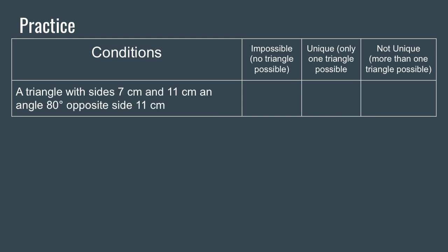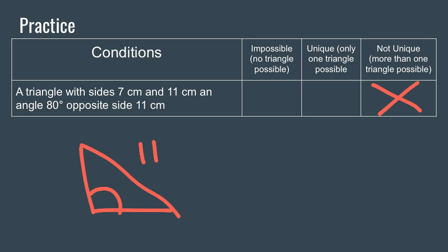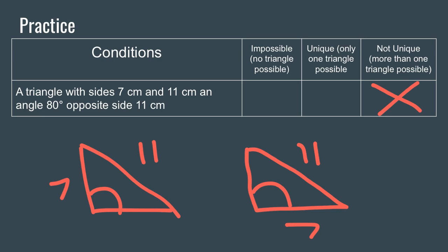Finally, a triangle with sides 7 and 11 centimeters and an angle of 80 degrees opposite the side of 11 centimeters. This condition results in more than one possible triangle. You can have the 80-degree angle with the 11 opposite it and the 7 here, or you can arrange it differently with the same opposite relationship, potentially resulting in a different triangle. When the angle is opposite one side — SSA — it results in more than one possibility.